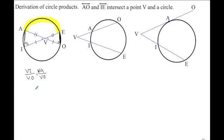However, it's usually more convenient to remember this formula in its cross product form and that is if I multiply across this way and that way, I get two products. And that's called the circle product. That's the one we're going to be using.